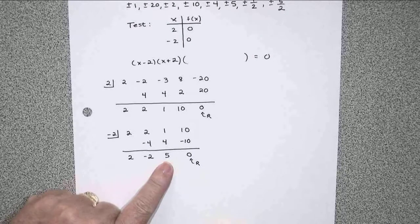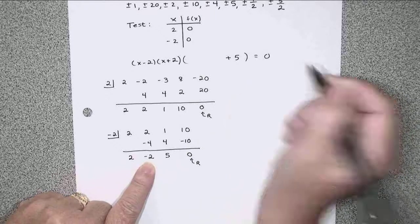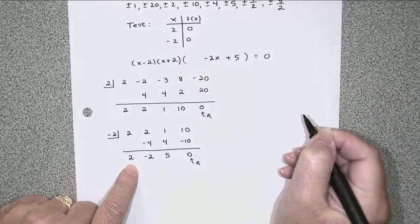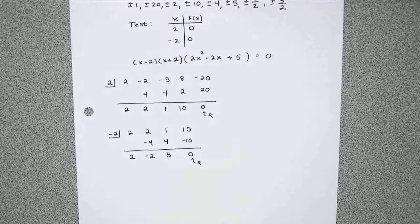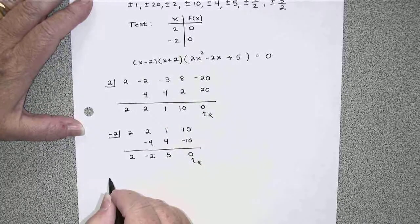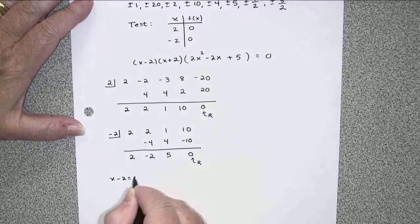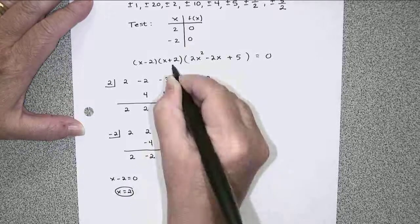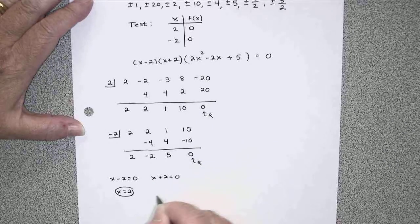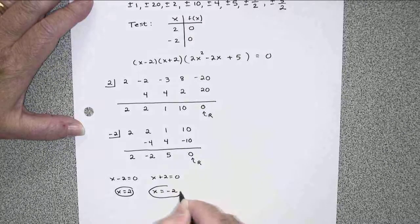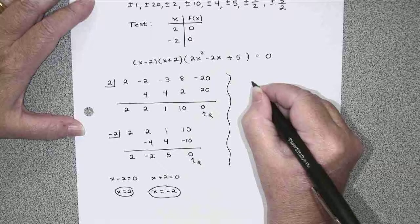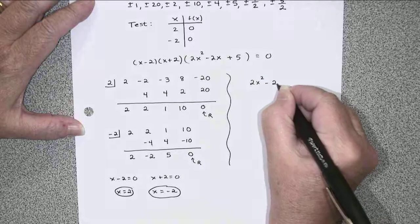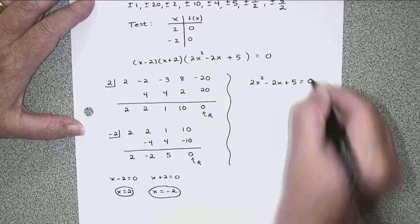So what have we got here? 5 plus a negative 2x to the first and a positive 2x squared. There's the new factored form of my original equation, and we've already said with the x minus 2, we get an answer of x equals 2, and from the x plus 2, we get an answer of negative 2. No surprises there. This one, though, is going to give us something to work with. 2x squared minus 2x plus 5 equals 0. And I'm going to use my quadratic formula on that.